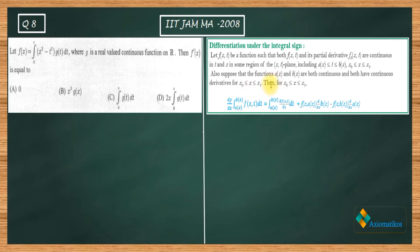Also, they said that these functions a(x) and b(x) are both continuous and both have continuous derivatives. So there is a typo here, I will correct that first.